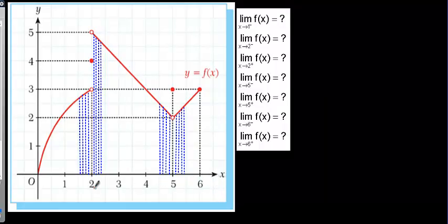Now let me explain on the graph. When you get closer to a value, especially for piecewise functions, you can get different values depending on which side you approach from. Here, two is important. When you get closer to two from the negative side — that means two minus — the function is getting closer to a particular value. When I check, it is equal to three. So the limit at two from the negative side is three.